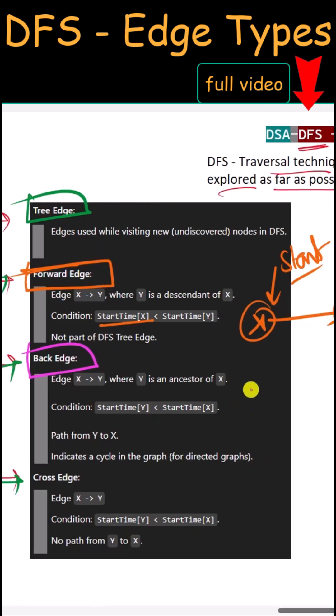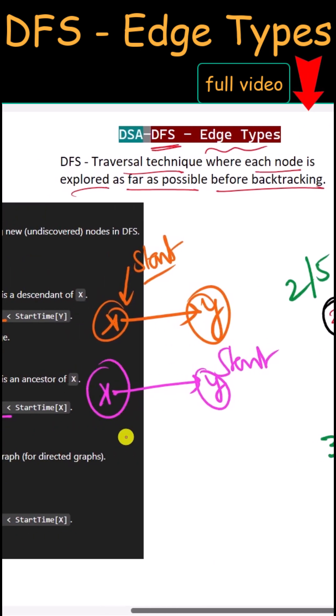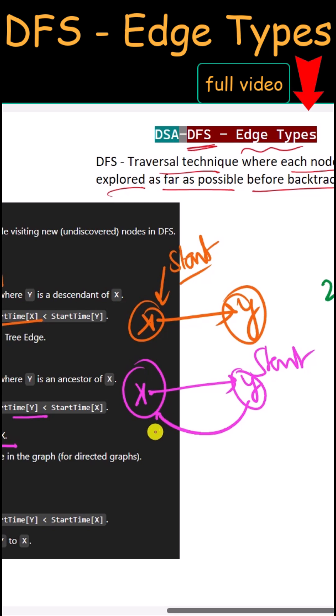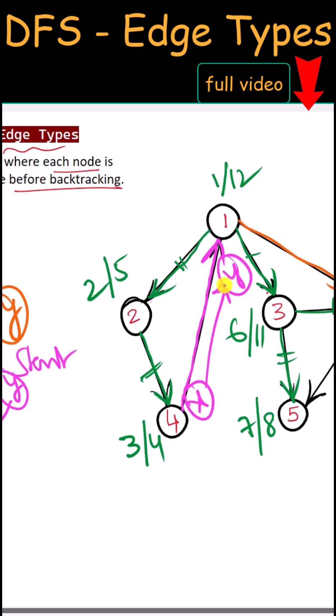In case of the back edge, Y must start before X and also we should have one path from Y to X. Like this edge from 4 to 1. 4 is X and 1 is Y. Y starts before X and we have one path from Y to X, so this is one back edge.